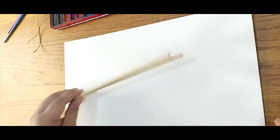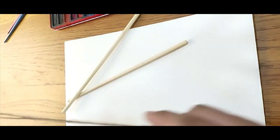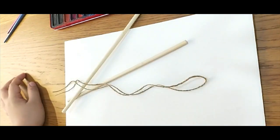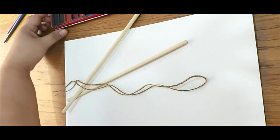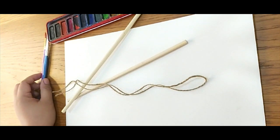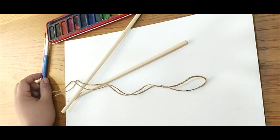Good morning! In making cherry blossom scrolls, we will be needing a paper, a stick, and then a string. And then for me, I'm going to use watercolors, so I need a paintbrush for it. But if you don't have a watercolor with you, you can use any coloring materials that you have at home.